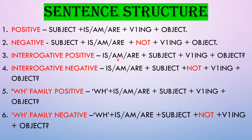In an interrogative positive sentence, the helping verb comes first: is/am/are + subject + present participle form of verb + object. In an interrogative negative sentence: is/am/are + subject + not + first form of verb with -ing + object.